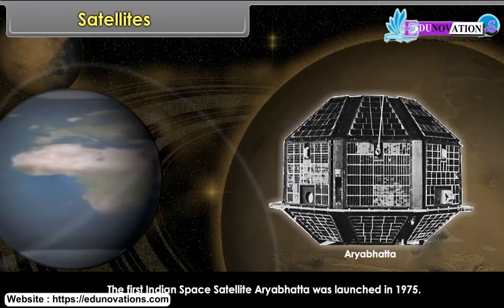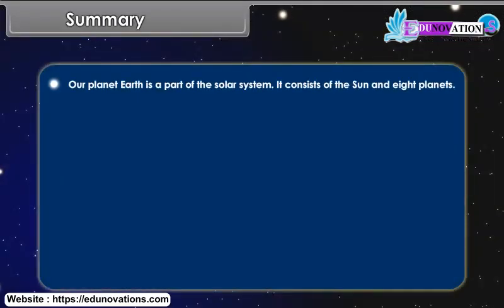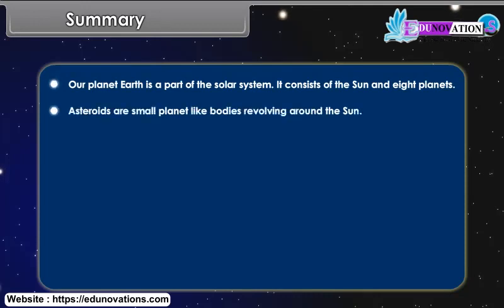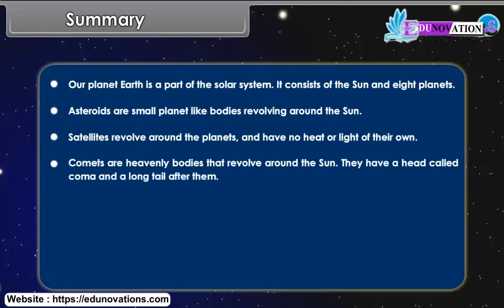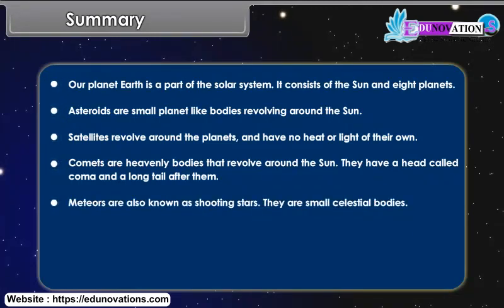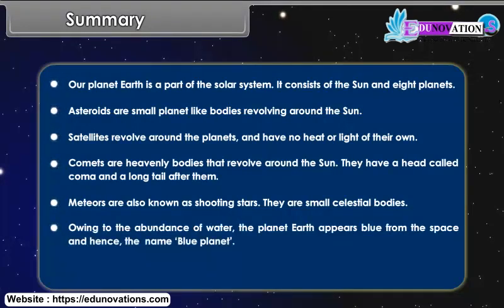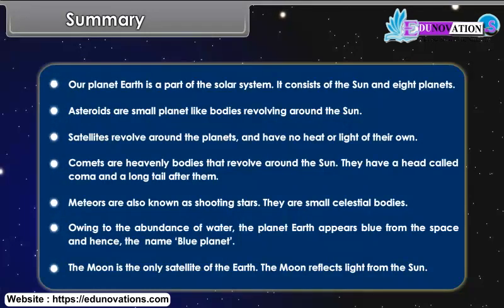In summary, our planet Earth is a part of the solar system, which consists of the Sun and 8 planets. Asteroids are small planet-like bodies revolving around the Sun. Satellites revolve around the planets and have no heat or light of their own. Comets are heavenly bodies with a head called Coma and a long tail. Meteors are also known as shooting stars. Owing to the abundance of water, Earth appears blue from space and is called the Blue Planet. The Moon is the only satellite of the Earth and reflects light from the Sun.